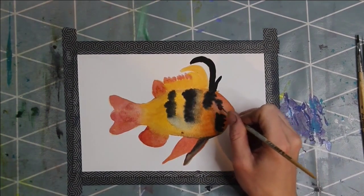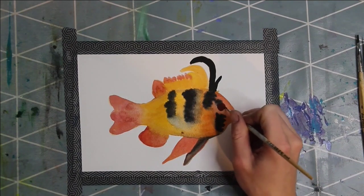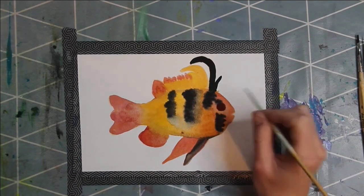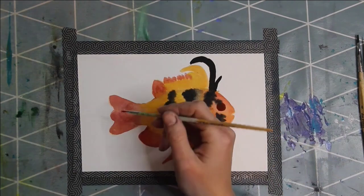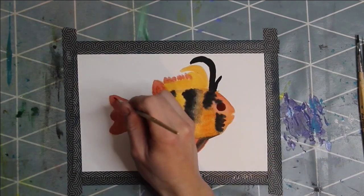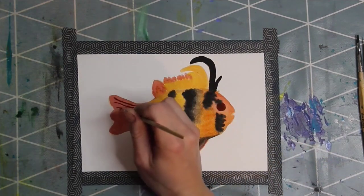After drying it's time for details. First I draw a red circle for the eye. With a dark red I draw red lines on the back fin and fins under the white body.